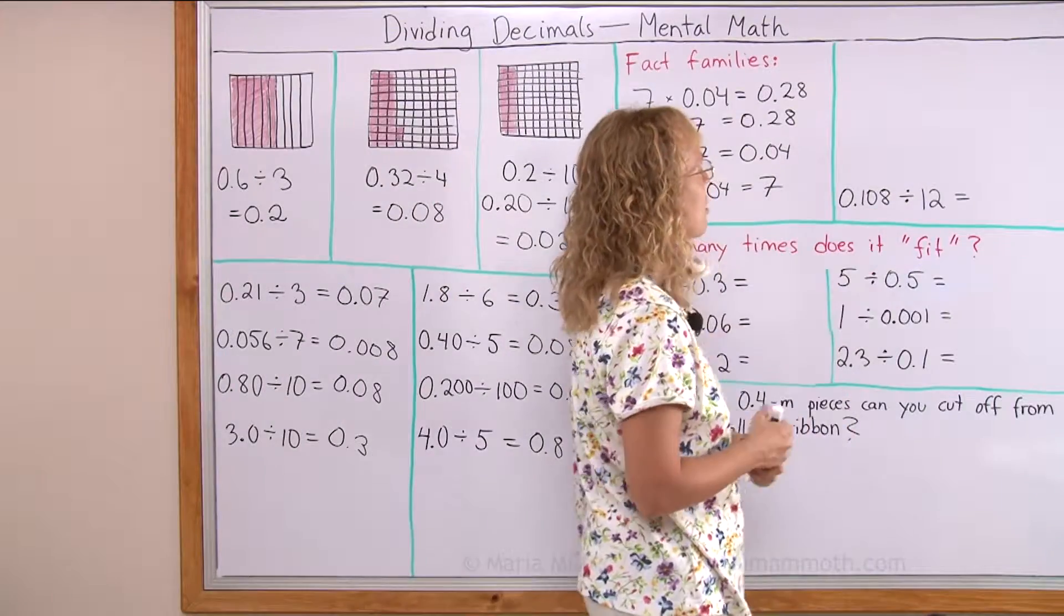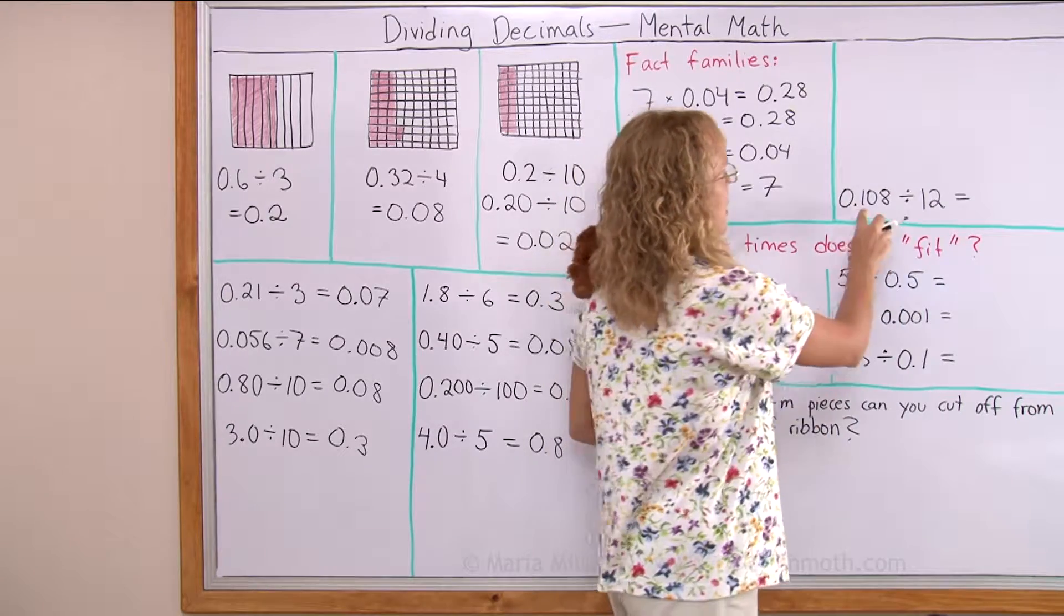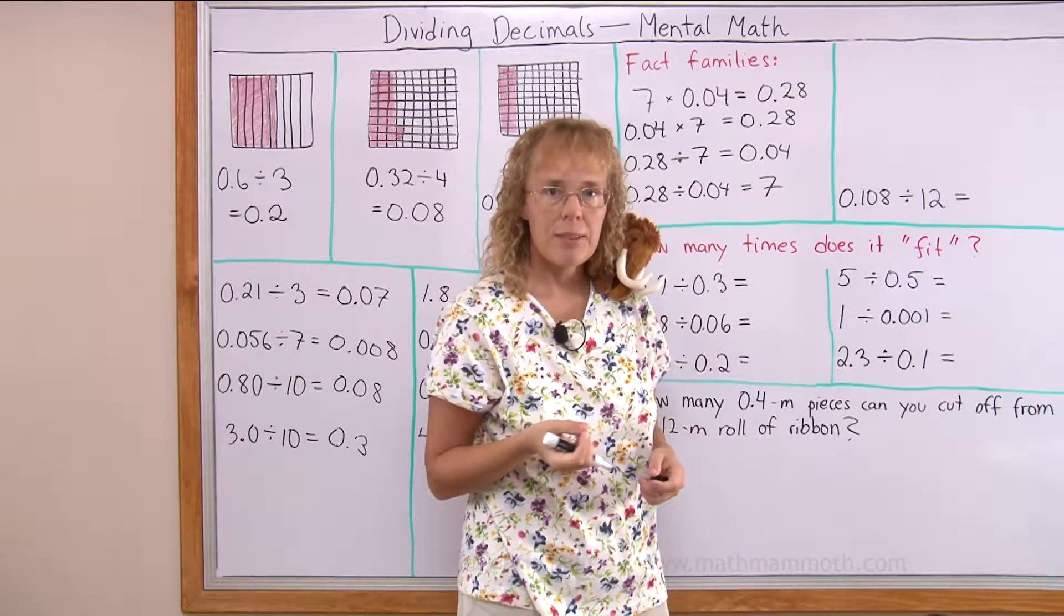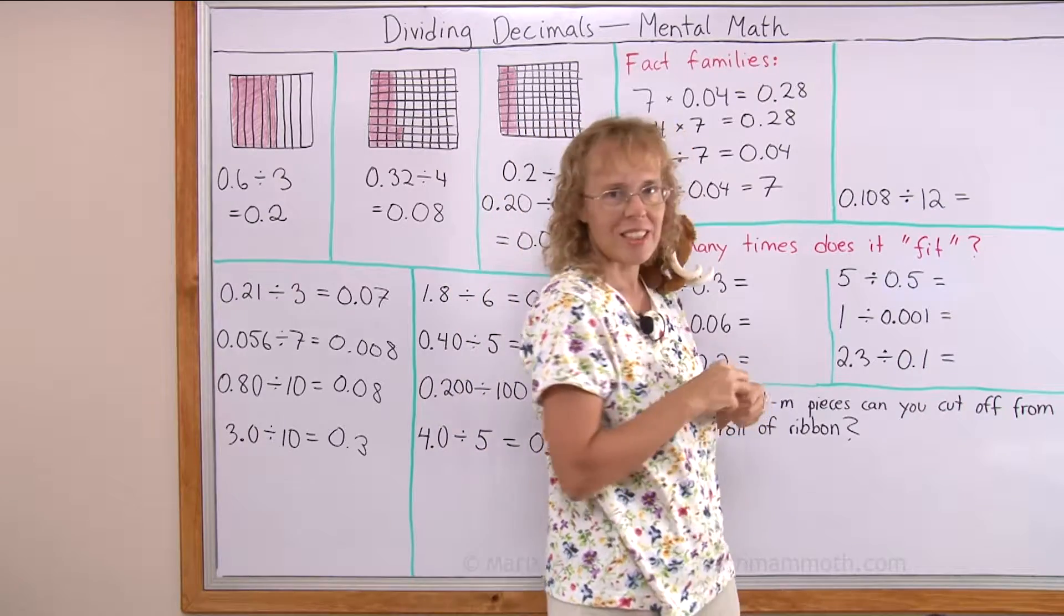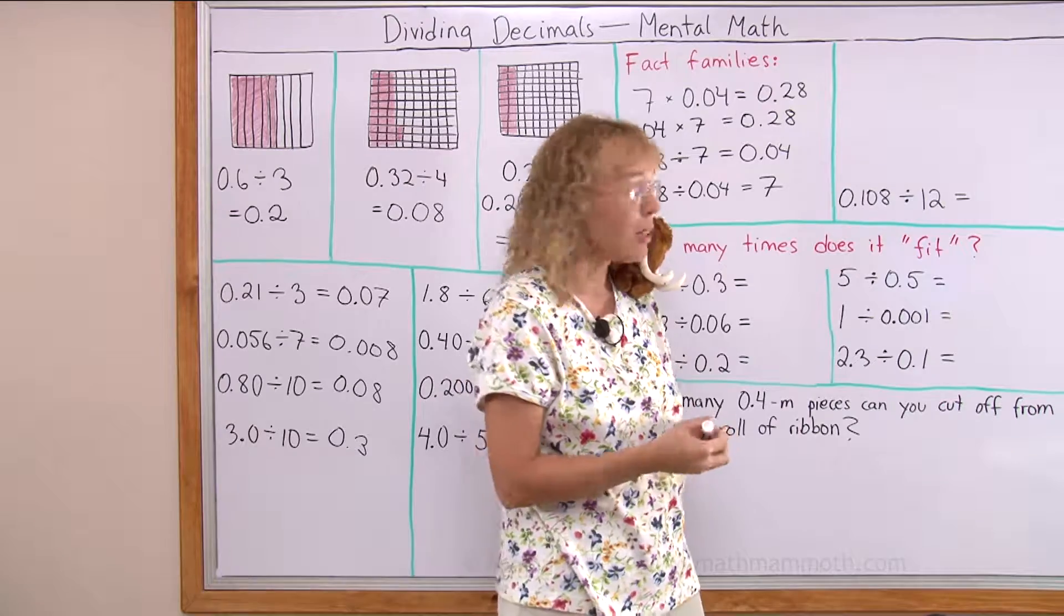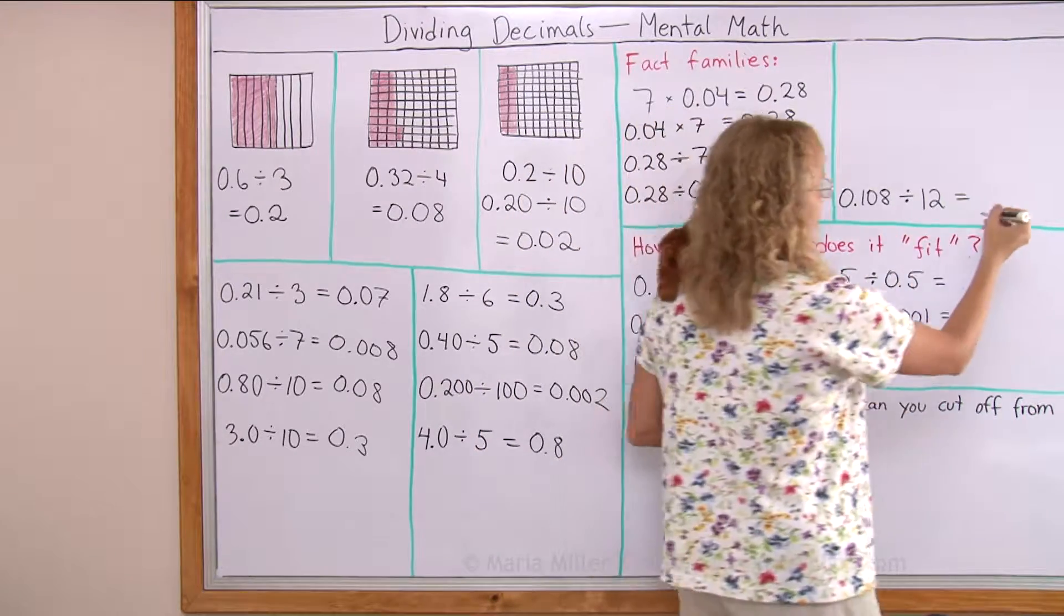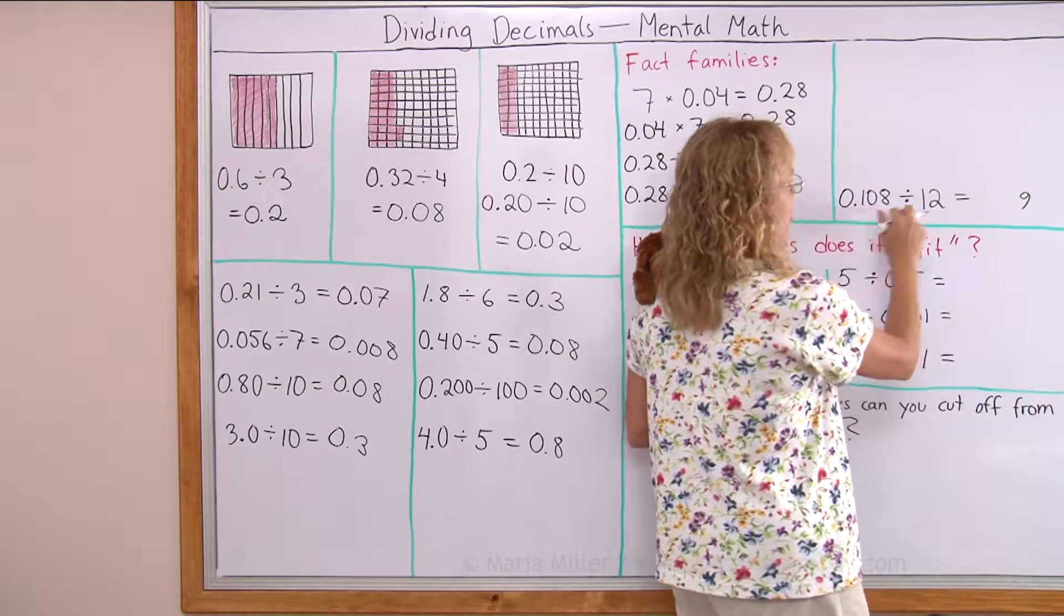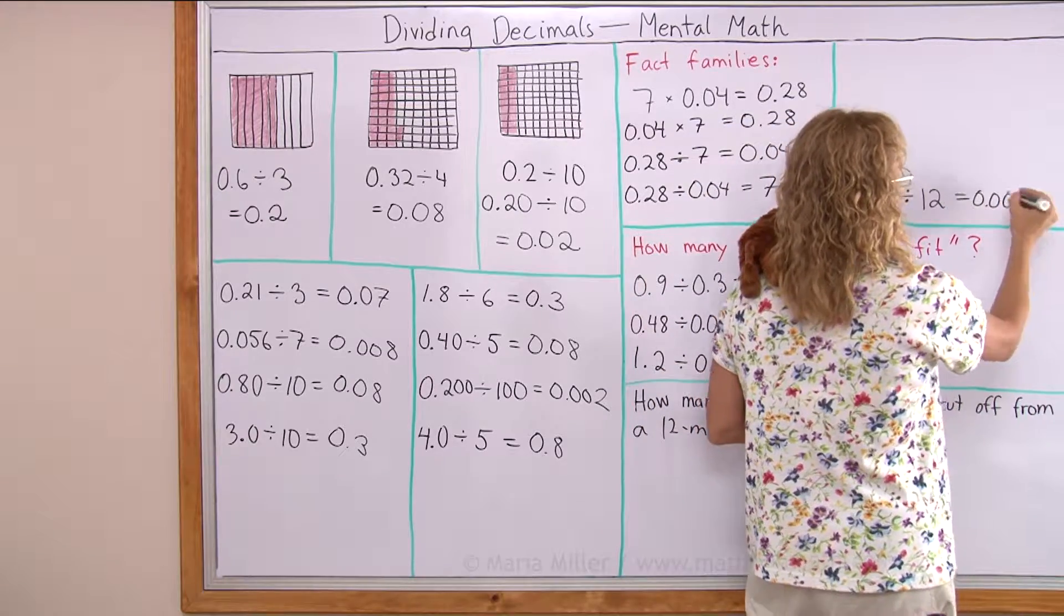Here's another fact family we can build. It starts with a division, this is 108 thousandths. So we'll use the blueberry muffin trick. 108 blueberry muffins divided between 12 persons, each person would get 9 muffins. But I had thousandths, so I'll make this 9 thousandths.